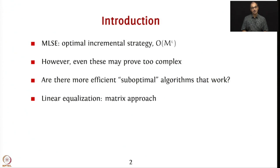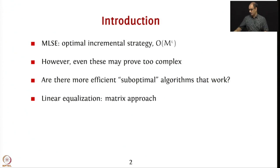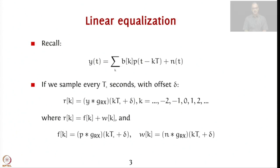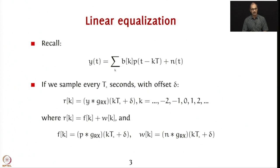In today's discussion, we are going to look at the zero forcing equalizer in particular. If you recall the model with which we have been operating, our y(t) = sum of b_k * p(t − kT) plus noise, and the noise is additive white Gaussian. Note that capital T is the number of seconds per symbol — that is, it's the duration of one symbol.